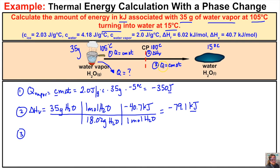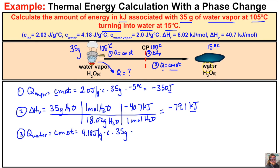In step three, we figure out how much thermal energy the water needs to release as it goes from 100 degrees Celsius to our final temperature of 15 degrees Celsius. Using Q = cmΔT: the specific heat of water is 4.18 joules per gram degrees Celsius, the mass is 35 grams, and the change in temperature is 15 minus 100 = negative 85 degrees Celsius. Calculating: 4.18 × 35 × negative 85 = negative 12,435.5 joules.